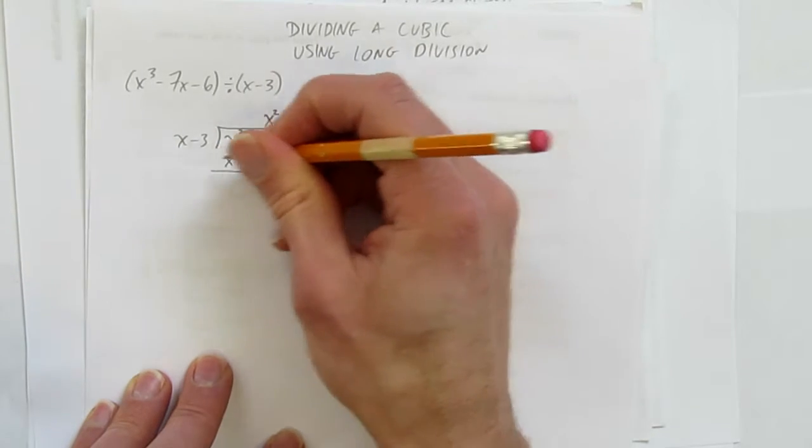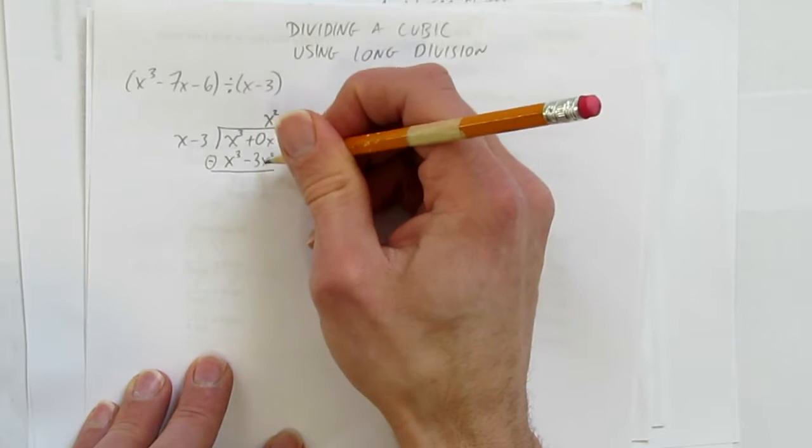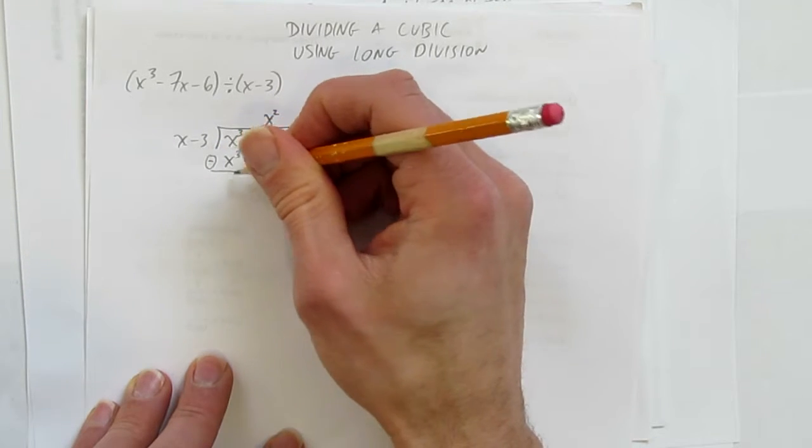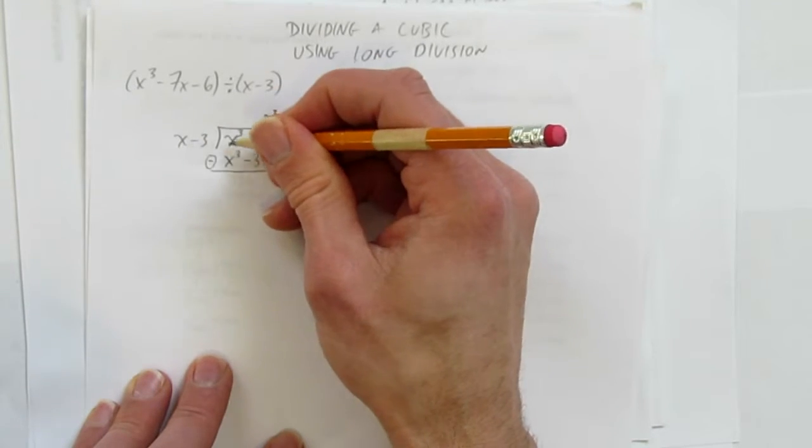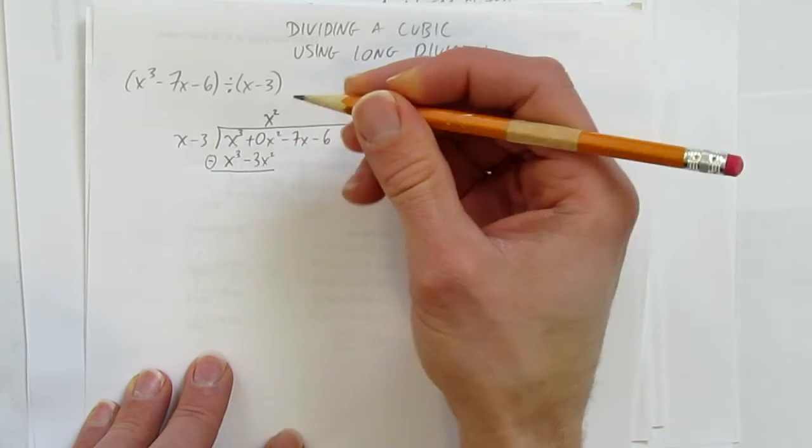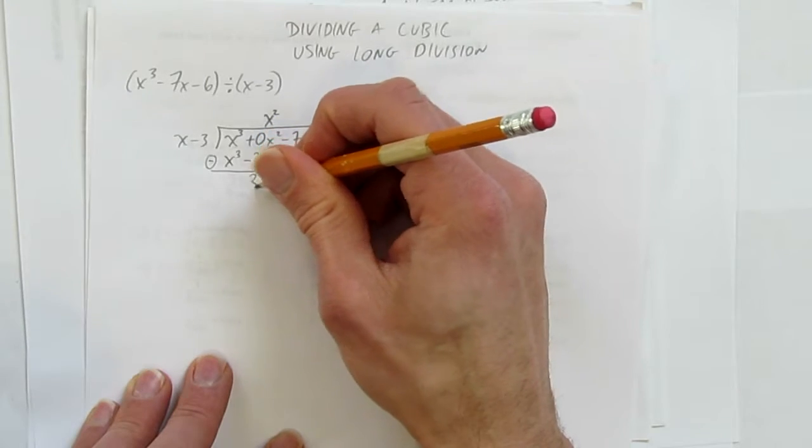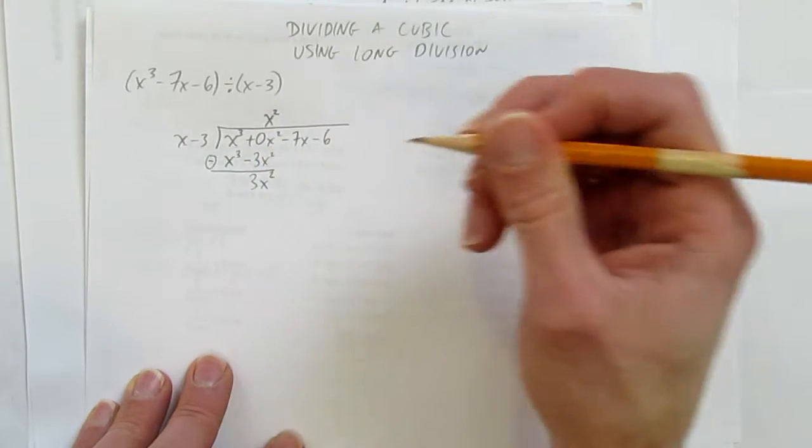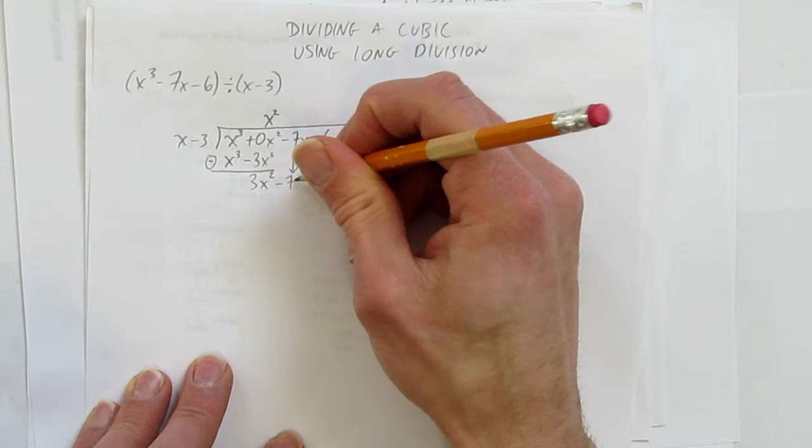We'll subtract. x³ minus x³ gives nothing, which is what we wanted. 0 minus (-3x²) is 0 + 3x², giving positive 3x². Bring the next number down: -7x.